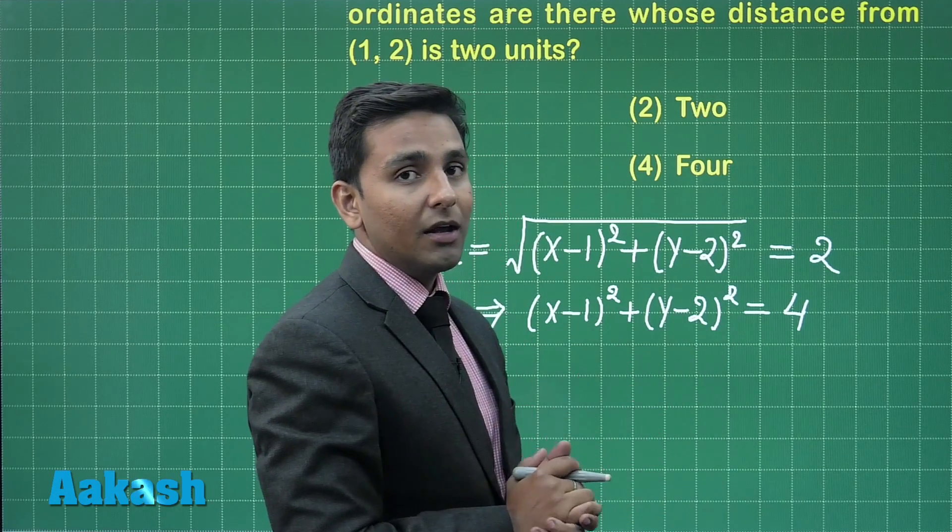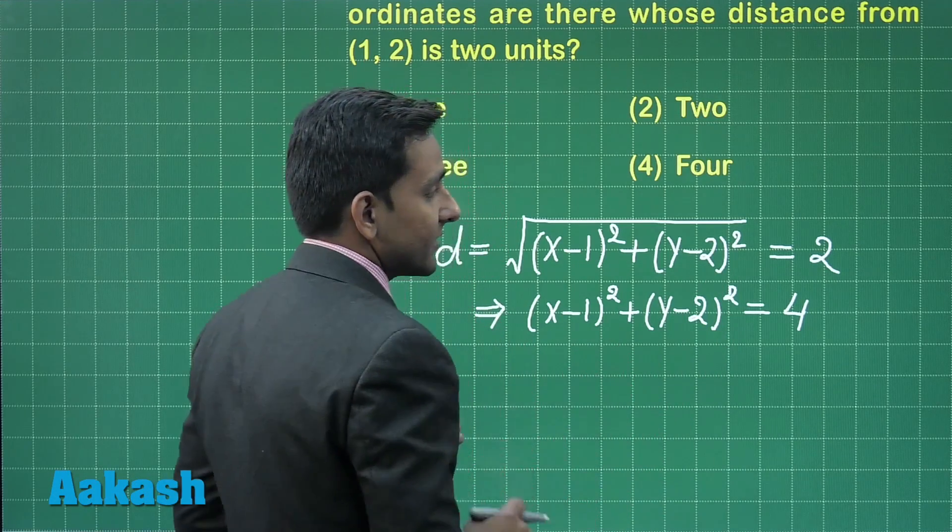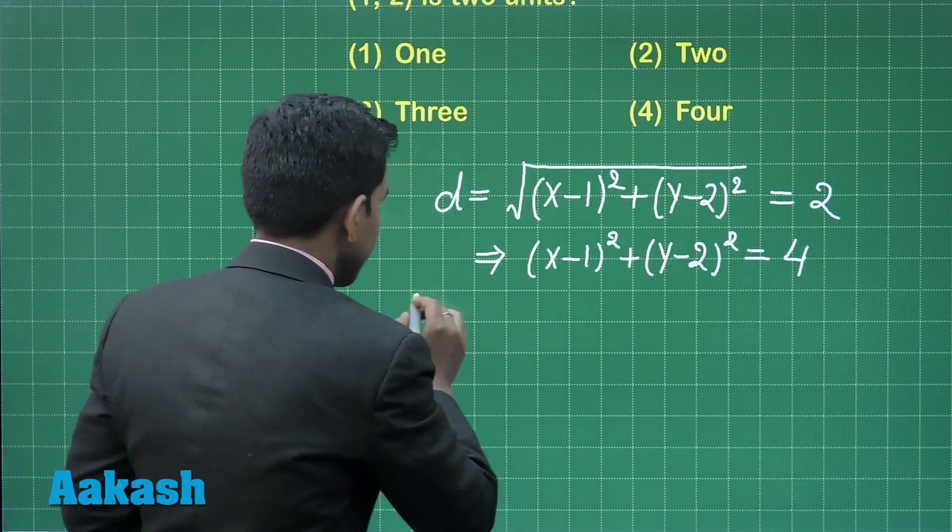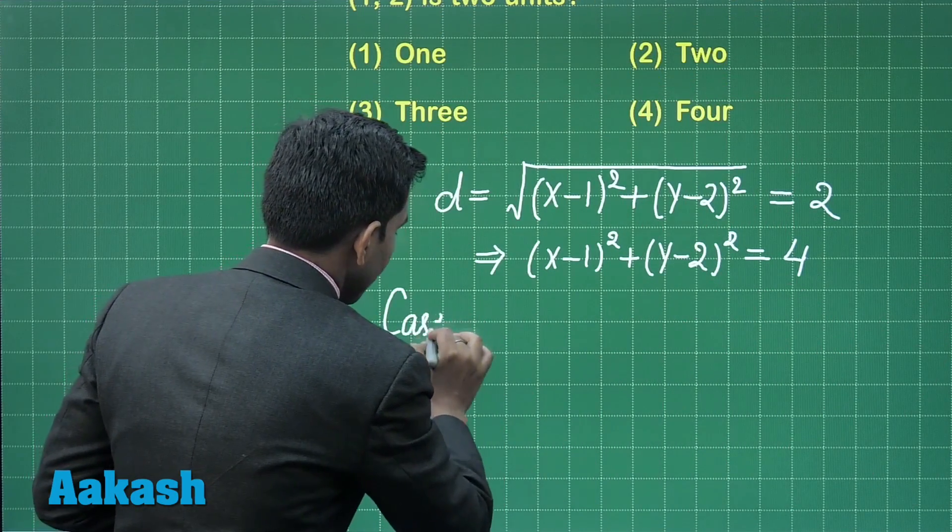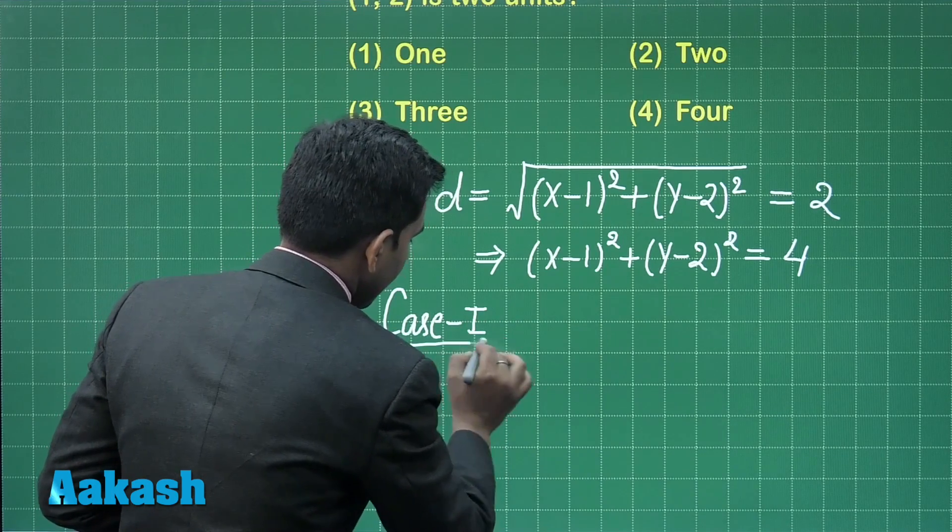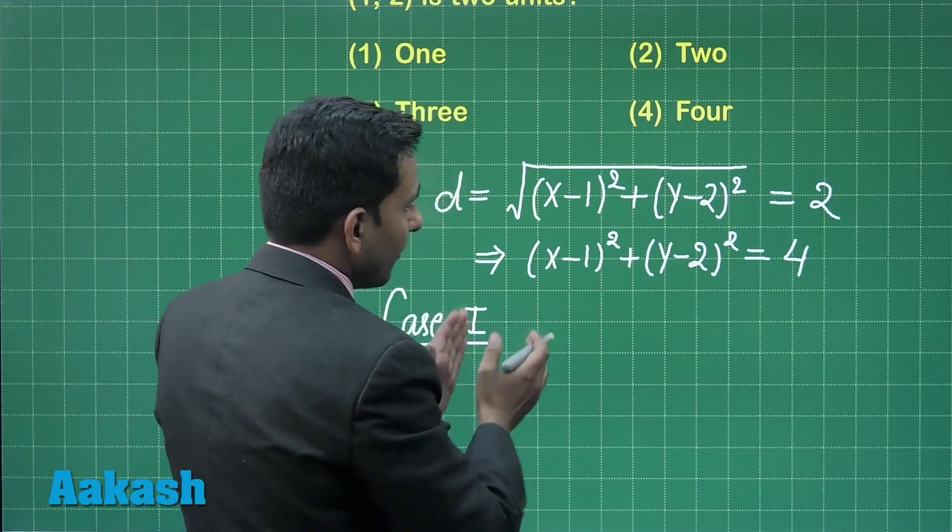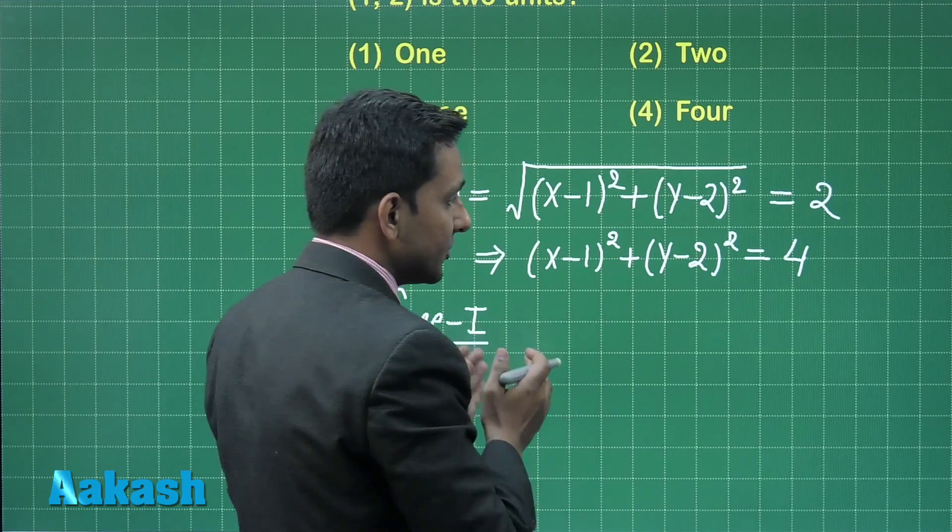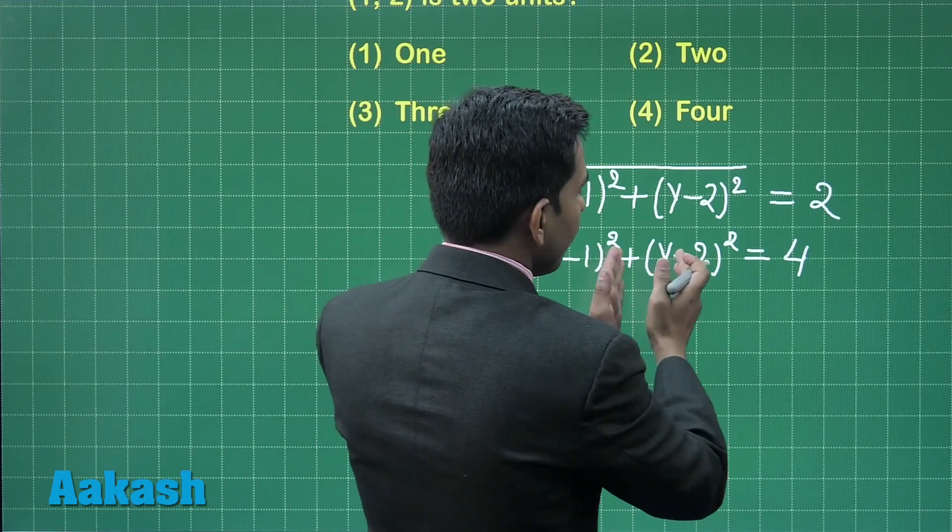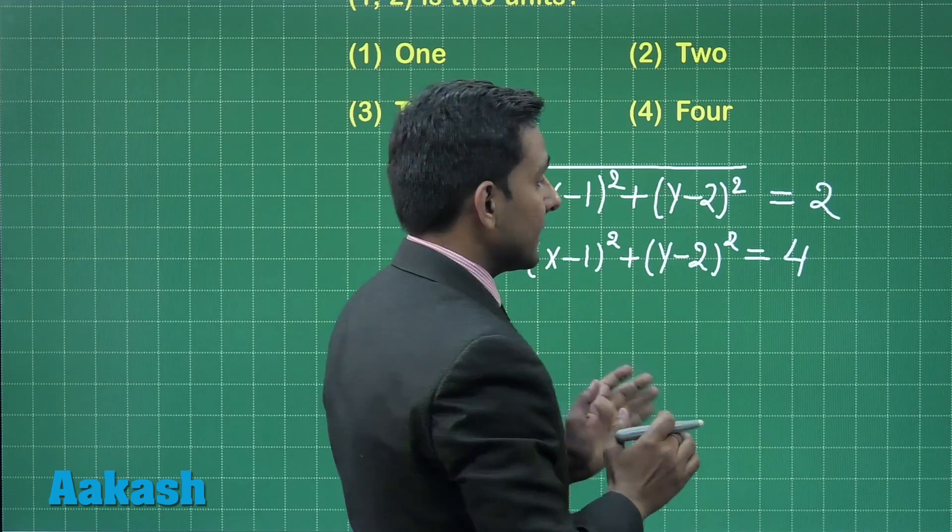This is only possible in two different cases. Case 1: when (x minus 1) squared is 0 and (y minus 2) squared is 4.